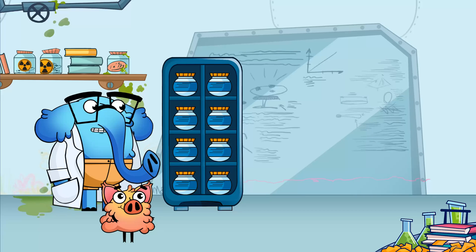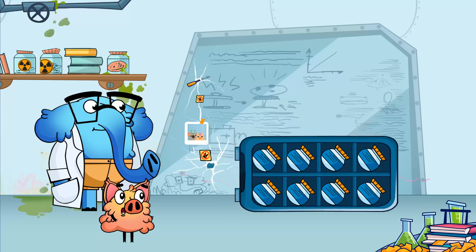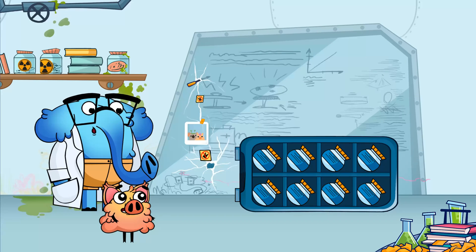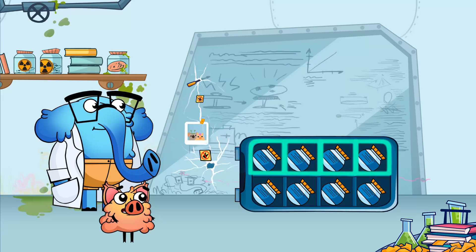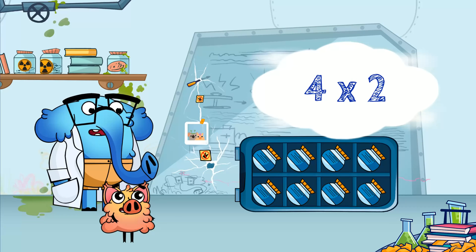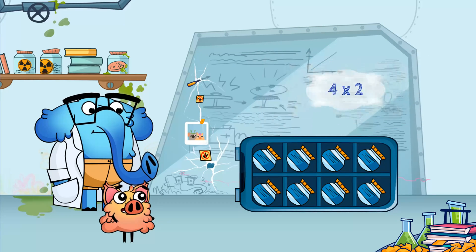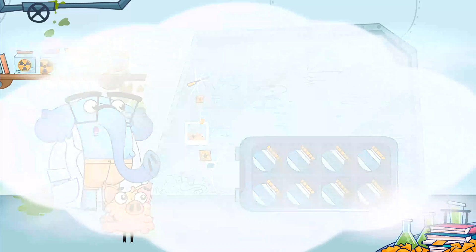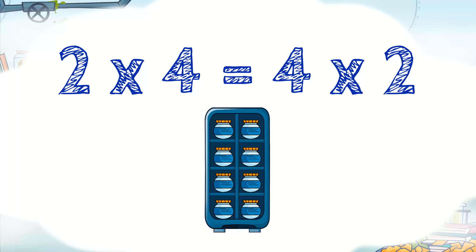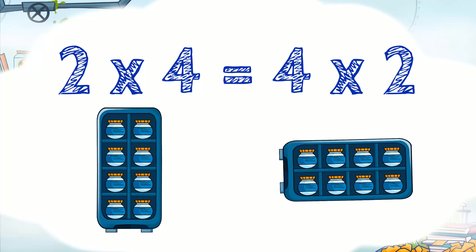Now let's flip the shelf. Look at the shelf now. How many rows of bottles do you see? 2. And how many bottles are in each row? 4. Then we can write this down as 4 times 2. Has the total number of bottles changed after we flipped the shelf? No. Exactly! The total number of bottles hasn't changed. This means 2 times 4 equals 4 times 2. When we flipped the shelf, the numbers in the multiplication flipped around, but the answer didn't change.